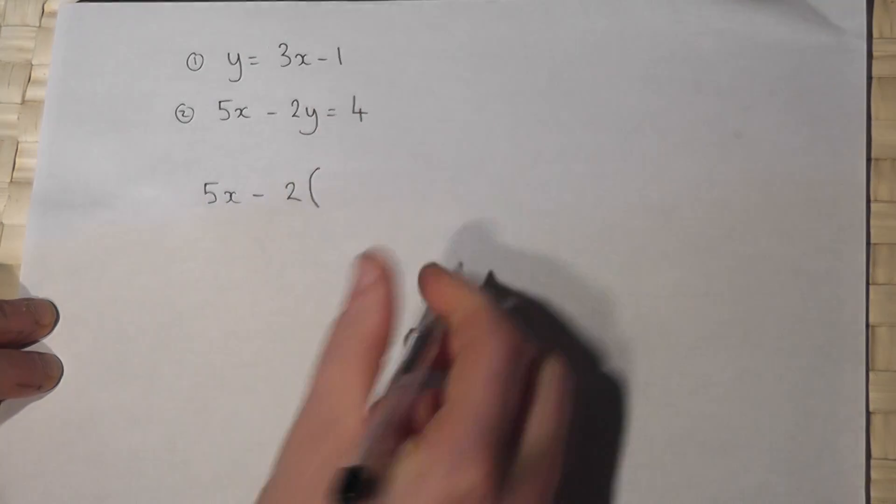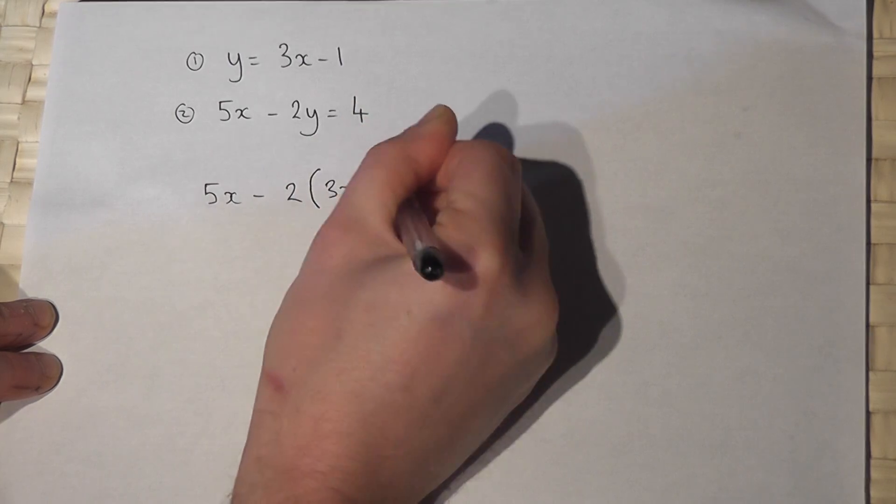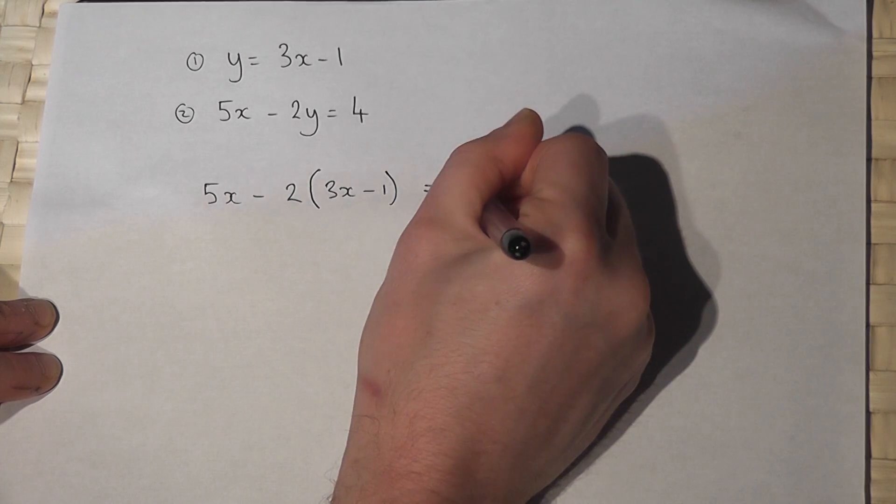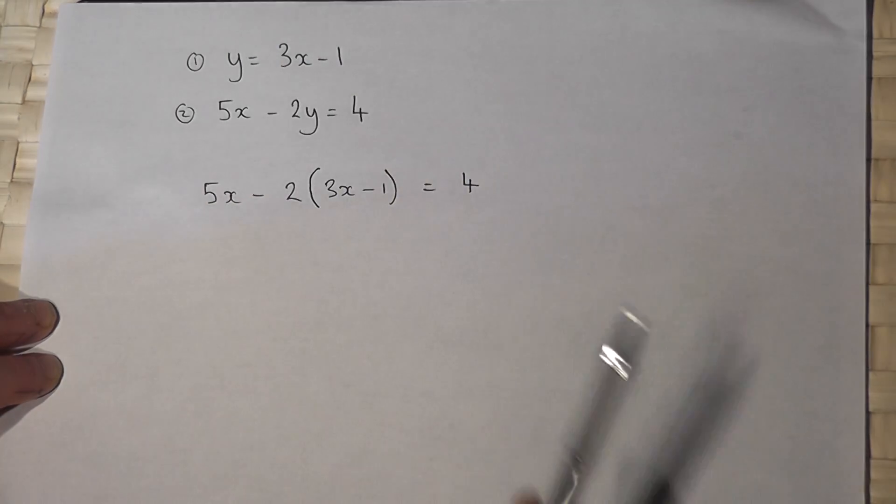So a bracket, y is the same as 3x minus 1, and this just equals 4. So I've subbed in the equation for y into the second equation.